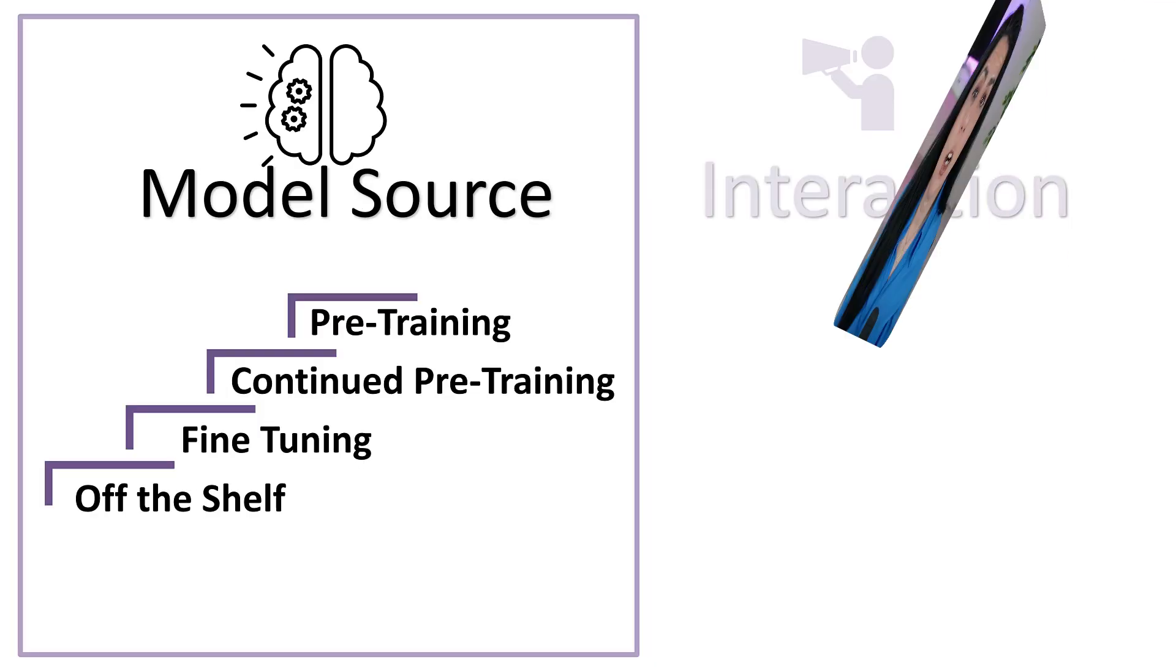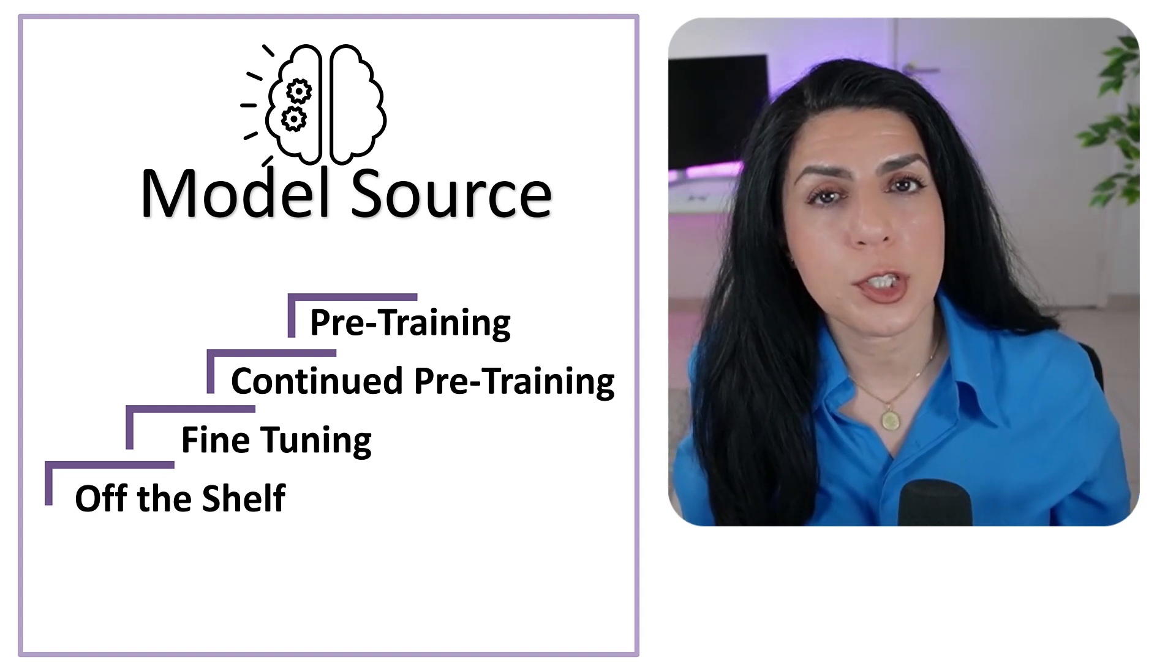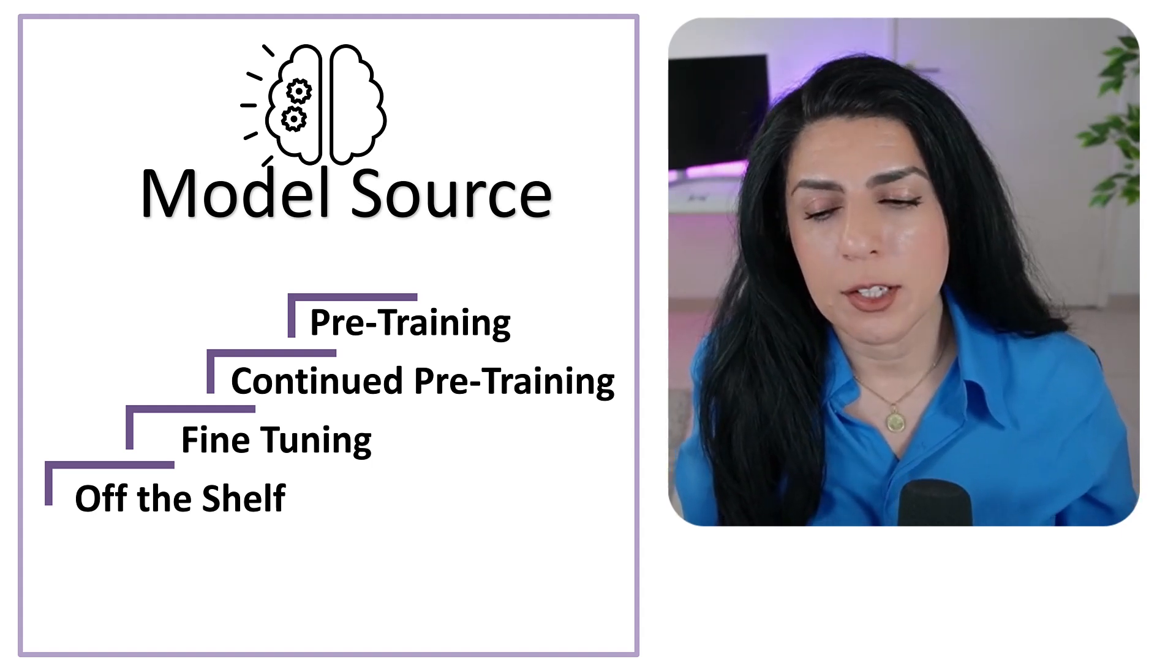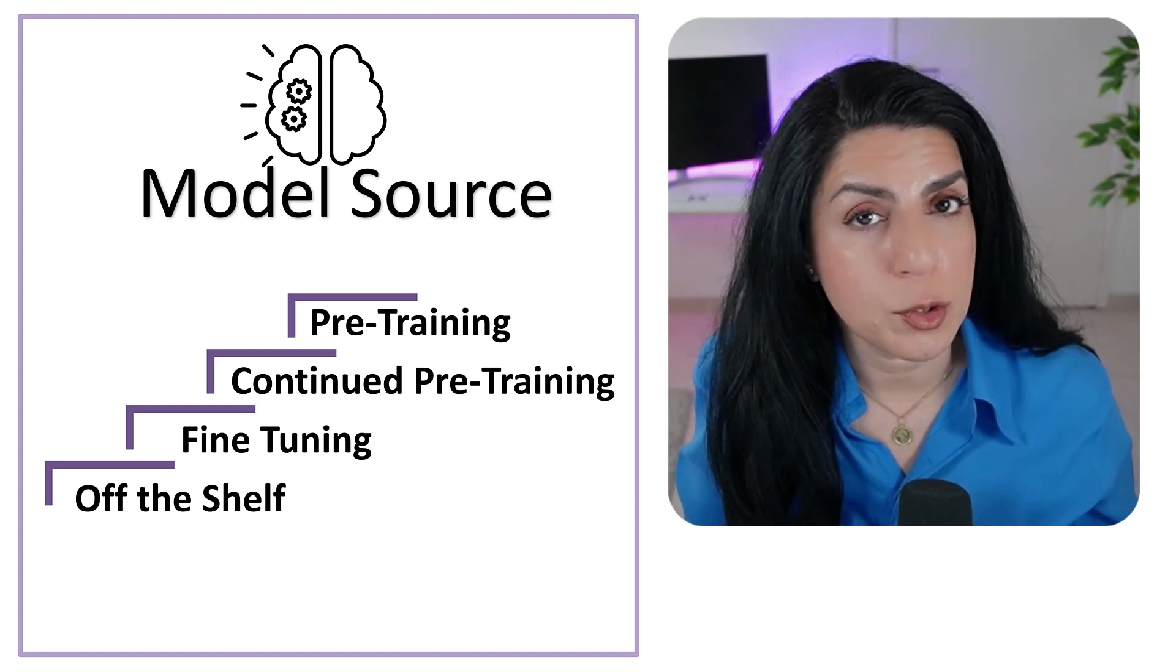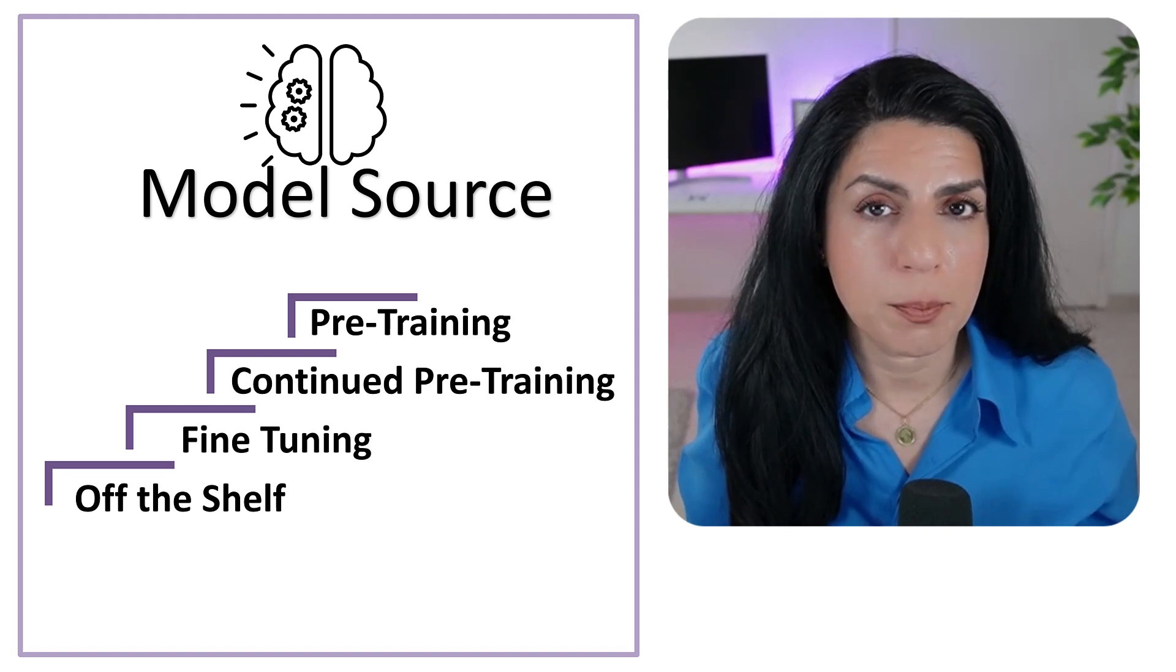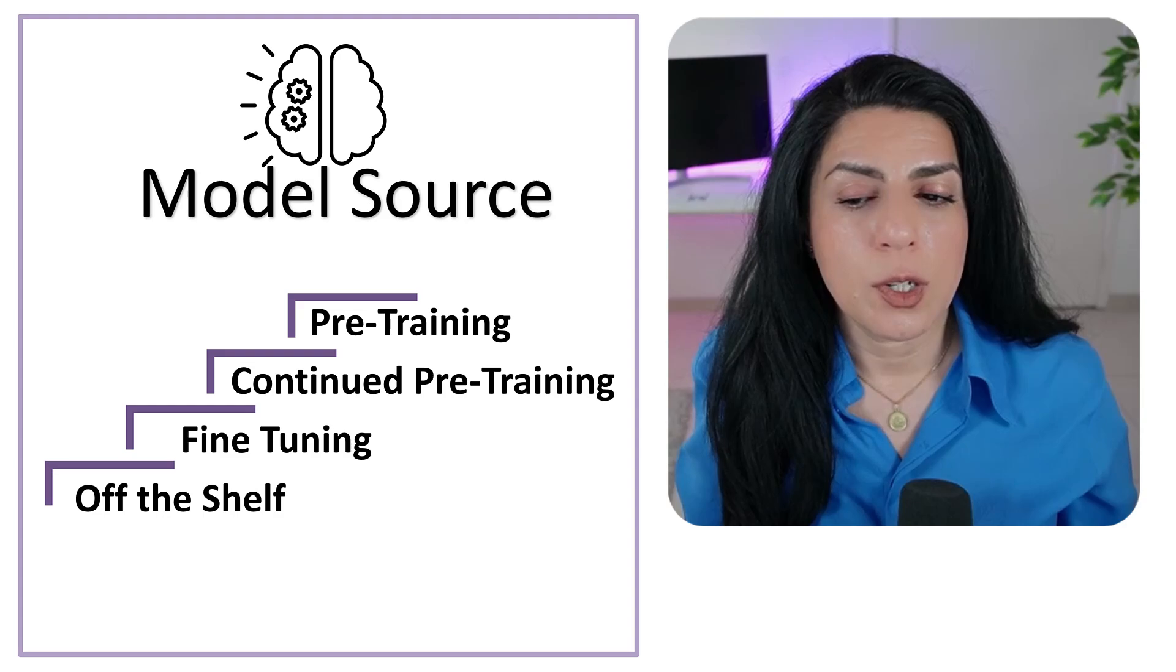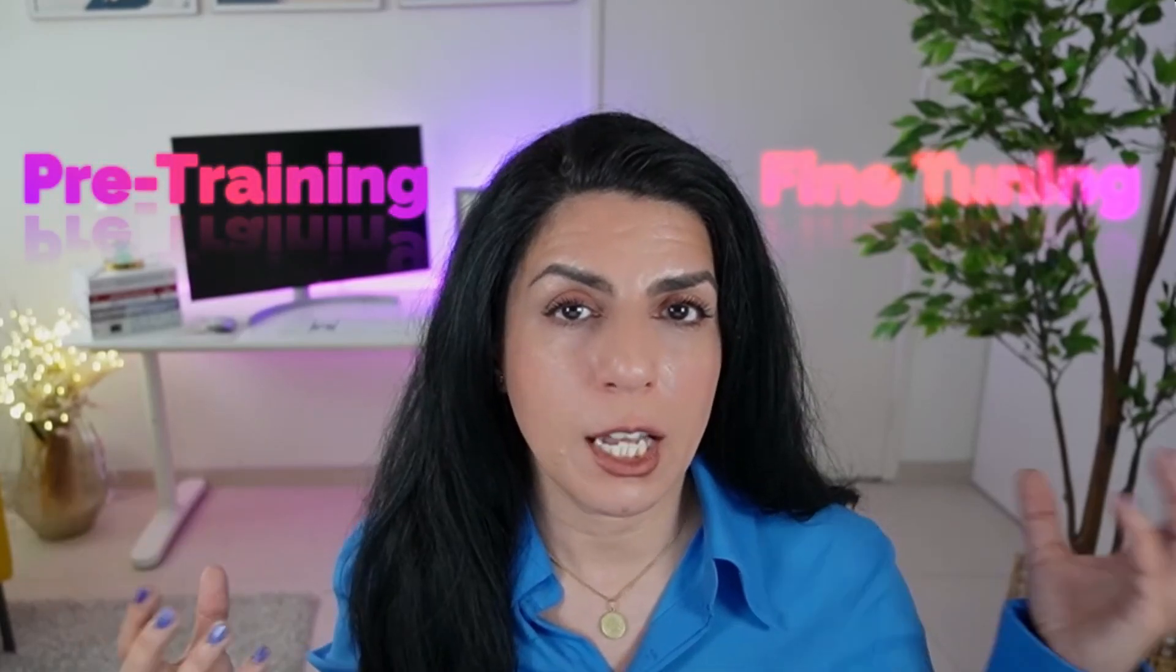Your model could be off the shelf, meaning you just download it and use it. You can fine-tune it a little bit by adjusting some parameters, then continue with more fine-tuning which is continued pre-training, and complete pre-training means you build your LLM from scratch. We call them pre-training and fine-tuning because building an LLM has two phases: pre-training and fine-tuning.